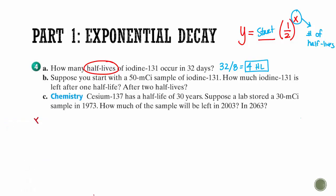So let's make a table. So zero half-lives, I start with 50. After one half-life, I'm going to cut it in half to get 25. And after two half-lives, I'm going to cut that in half to get 12.5. So after one, it's 25 millicuries, and after two, it would be 12.5.